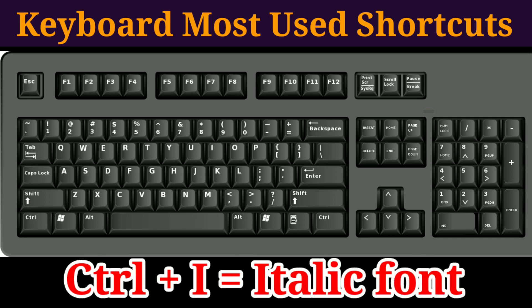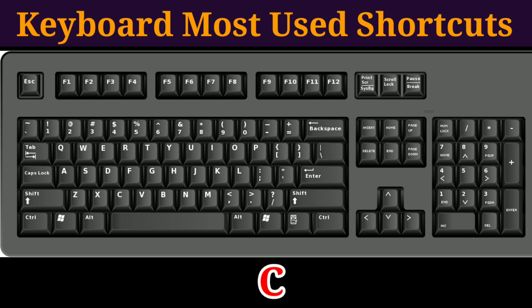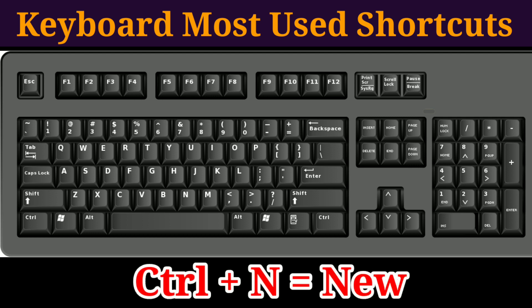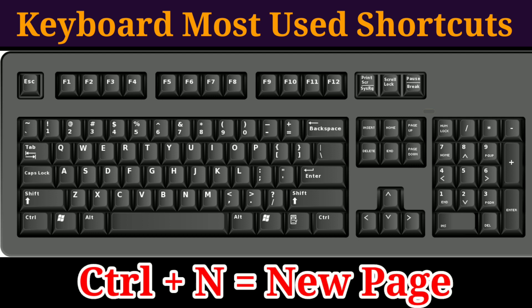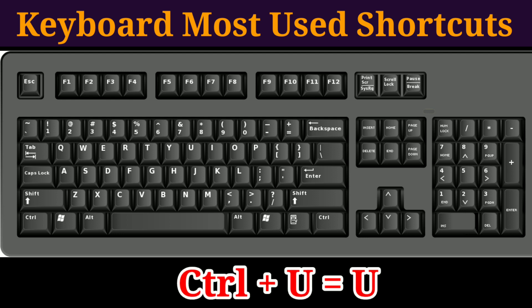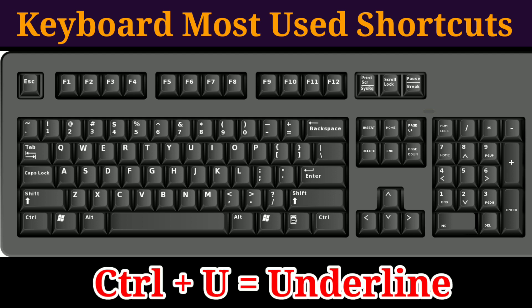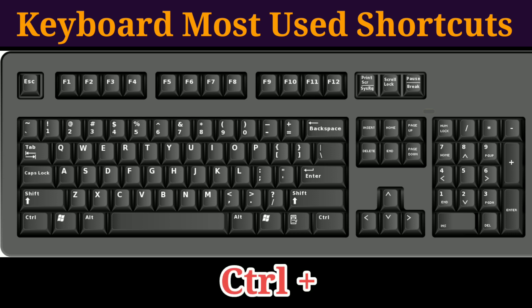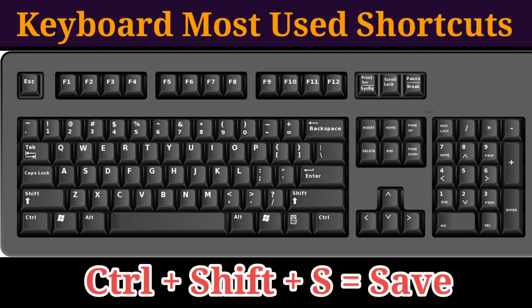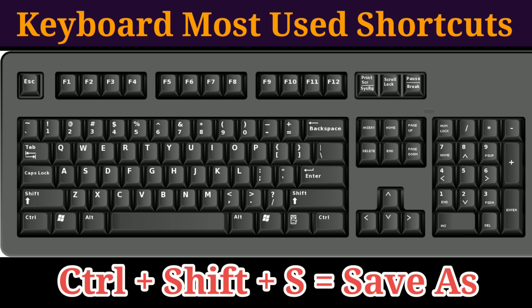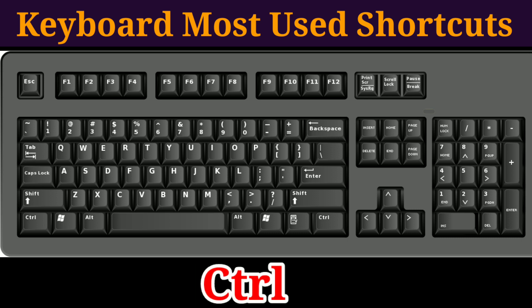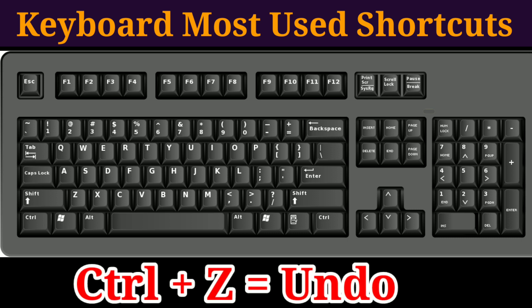Ctrl plus I for italic font — tircha likhne ke liye. Next, Ctrl plus N to open a new page. Next, Ctrl plus U to underline any word. Next, Ctrl plus Shift plus S for Save As. Next, Ctrl plus Z for undo.